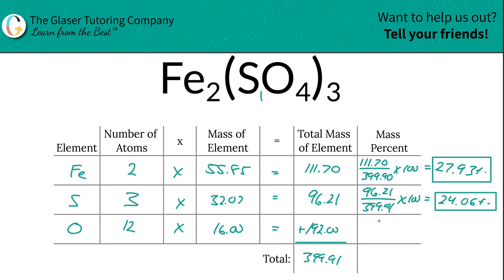Last but not least, oxygen. This is 192 divided by 399.91 times 100, which gives us 48.01 percent or so. This should all add up to 100—just check yourself before you wreck yourself.